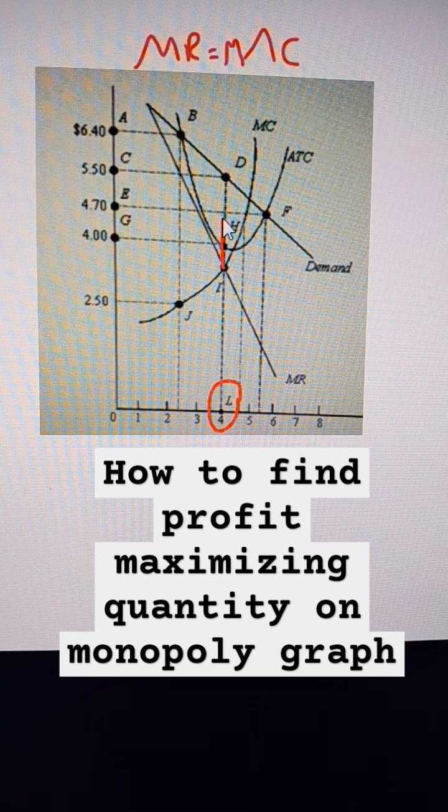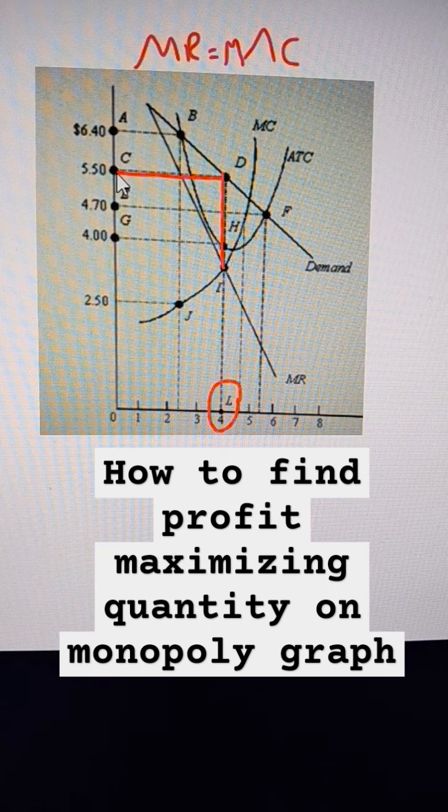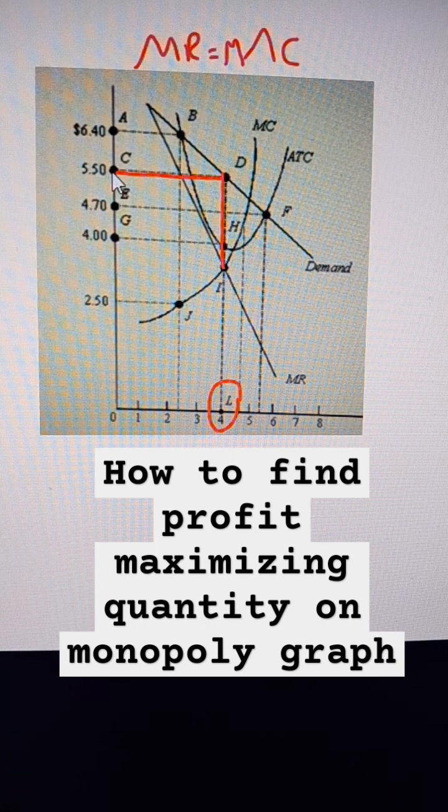Then we're going to mark up the price up to this point D right here. We're going to charge a price of $5.50. Profit maximizing price would be $5.50.